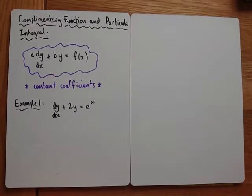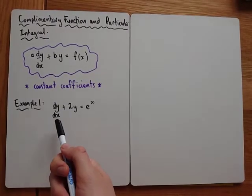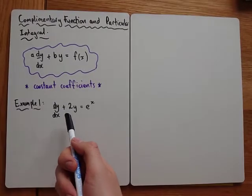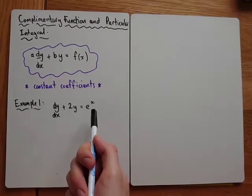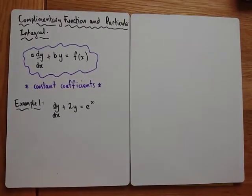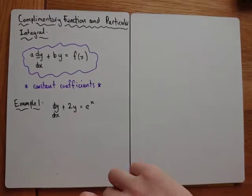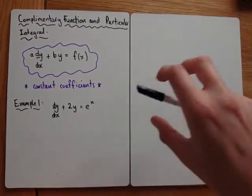OK, so the first example we're going to look at: we've got dy by dx plus 2y is equal to e to the x. The standard method is actually in two parts. The first thing we'll do is find the complementary function.